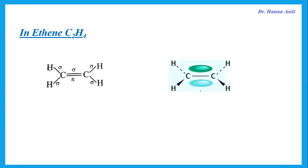For example, ethene. Ethene has single bonds with the hydrogens, and all single bonds are sigma. It also has a double bond between the two carbons, and the double bond is made up of one sigma and one pi. So, any double bond has one sigma, one pi. Looking at ethene, the total number of sigma bonds in this molecule is the four with the hydrogens and one in the double bond — that's a total of five sigma bonds — and there is also one pi bond in this molecule.